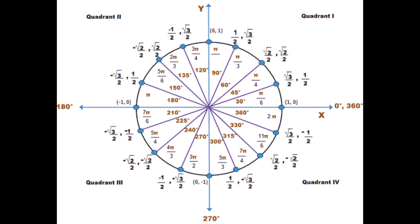Angles in the 1st quadrant are 30 degrees, 45 degrees, and 60 degrees. In the 2nd quadrant, angles are 120 degrees, 135 degrees, and 150 degrees. In the 3rd quadrant, angles are 210 degrees, 225 degrees, 240 degrees, and 270 degrees. While in the 4th quadrant, the angles are 300 degrees, 315 degrees, 330 degrees, and so on.